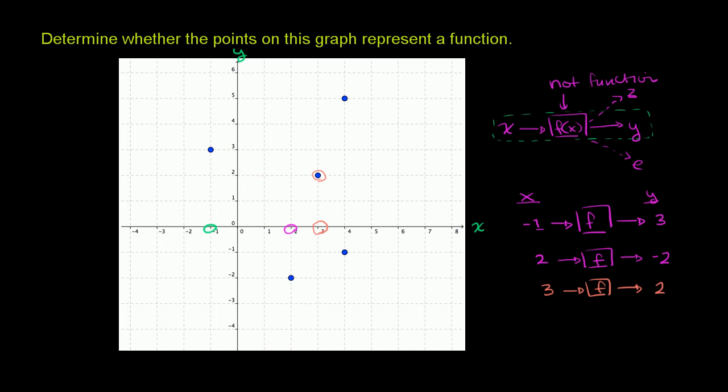And then we get to x is equal to 4, where it seems like this thing that could be a function is somewhat defined. It does try to associate 4 with things. But what's interesting here is it tries to associate 4 with two different things. All of a sudden, in this thing that we think might have been a function, but it looks like it might not be. So do we associate 4 with 5 or do we associate it with negative 1?